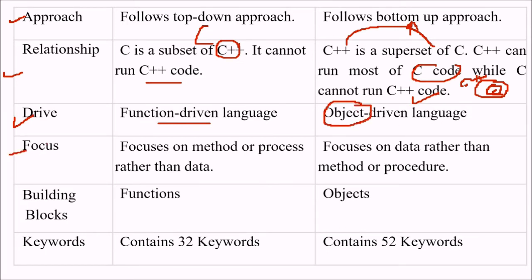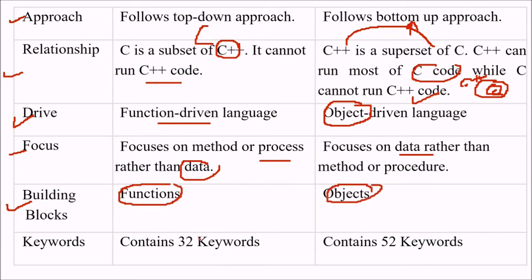With respect to focus, C focuses on methods or processes rather than data, while C++ focuses on data rather than the method or procedure. The building blocks in C are functions, while in C++ they are objects. C contains around 32 keywords while C++ has around 52.